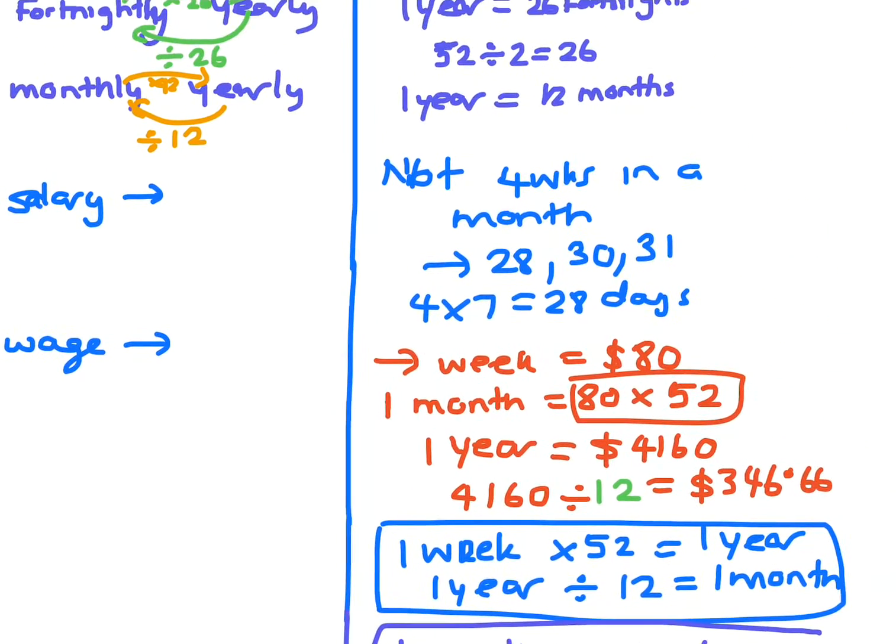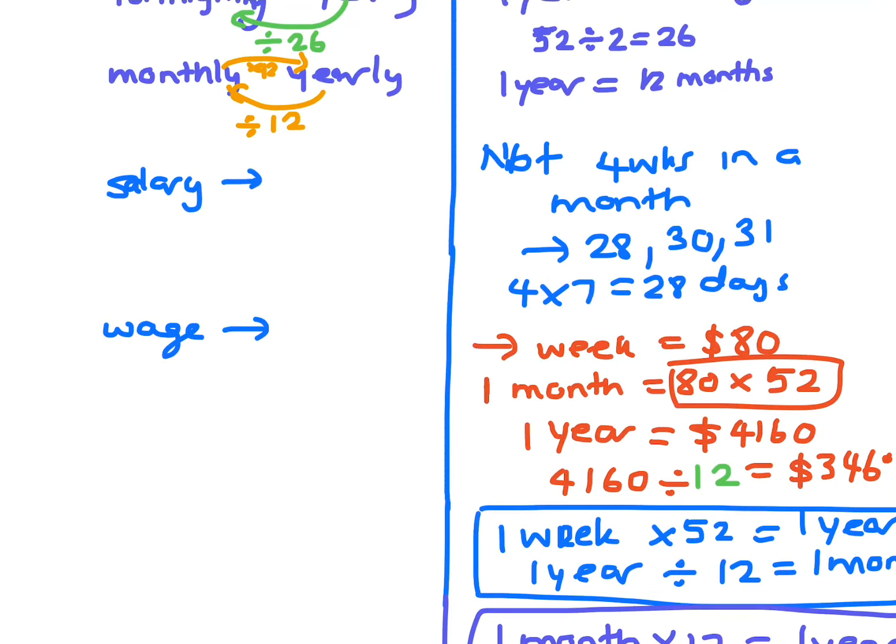So just lastly, a salary is how much you earn for a year. It's usually paid weekly or fortnightly or monthly. So it could be any of those.